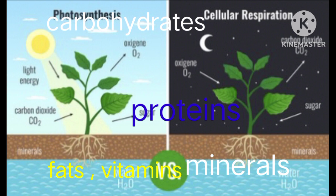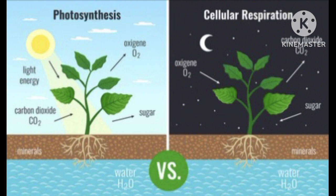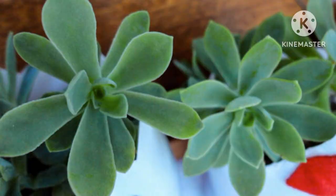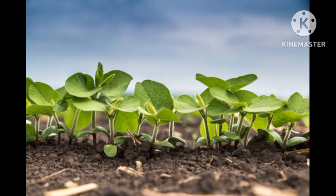Plants are the only organisms that prepare food for themselves using water, carbon dioxide, sunlight and minerals from their surroundings. The nutrients enable living organisms to build their bodies, to grow, and to repair damaged parts of their bodies.